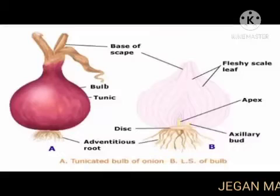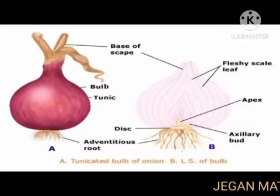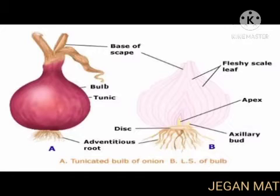Today we are going to see about underground stem modification and leaf. Bulb is a condensed, conical or convex stem surrounded by fleshy scale leaves.